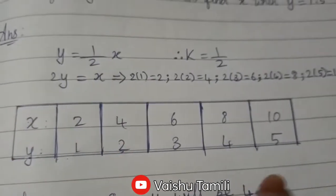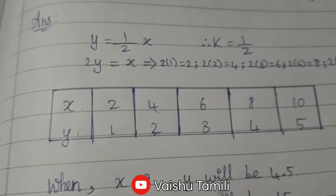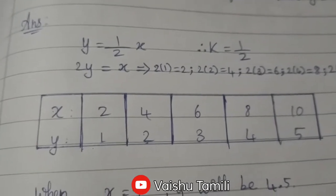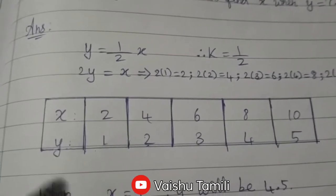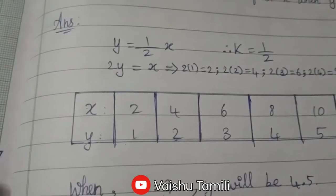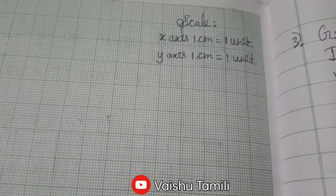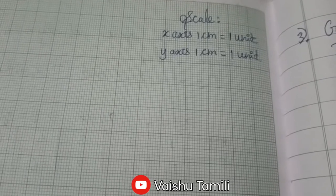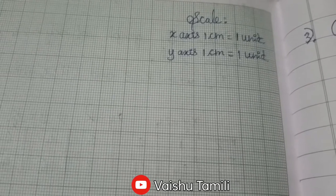The x values are 2, 4, 6, 8, and 10. We will multiply each by 1/2 to get the y values, and form a table. Now we will make a graph. The scale is: x-axis equals 1 unit, y-axis equals 1 unit.